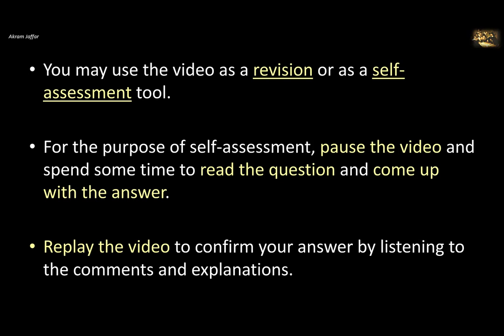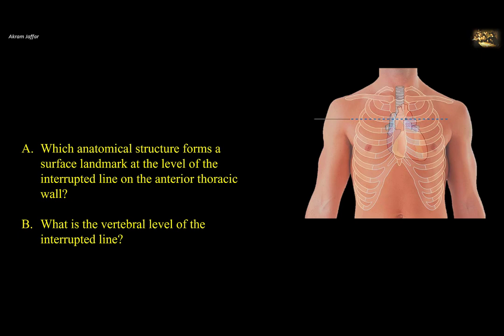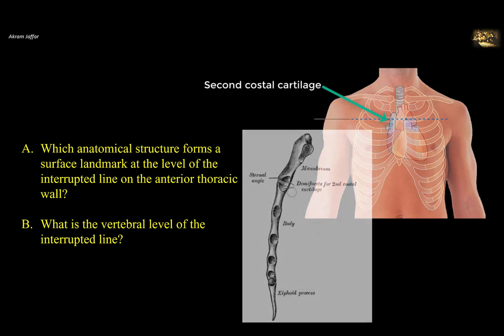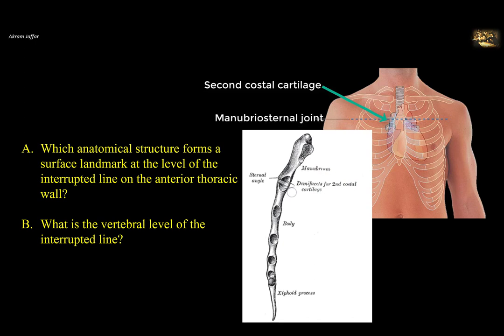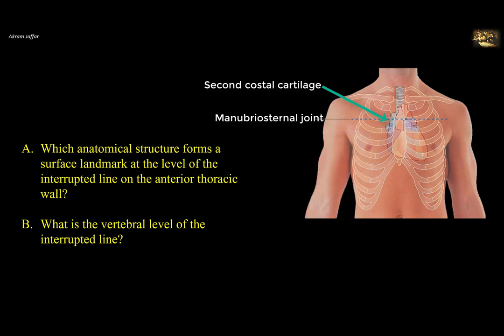Replay the video to confirm your answer by listening to the comments and explanations. Which anatomical structure forms a surface landmark at the level of the interrupted line on the anterior thoracic wall? The interrupted line lies in the transverse thoracic plane, at the level of the second costal cartilage. In the midline, the sternal angle, or the manubrio-sternal joint between the manubrium and the body of the sternum, can be felt as a horizontal ridge just underneath the skin. This is an important surface anatomical landmark used clinically and known as the angle of Lewis to identify the second costal cartilage.